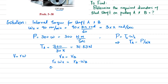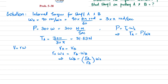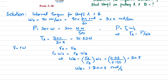Solving for omega_b: omega_b equals r_a divided by r_b times omega_a. Substituting: 0.06 divided by 0.150 multiplied by 3π, which gives omega_b equal to 1.20π radians per second.